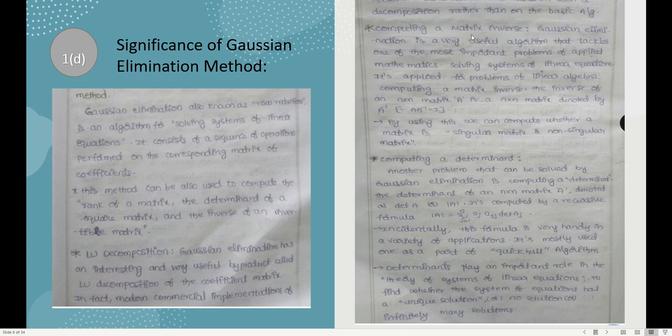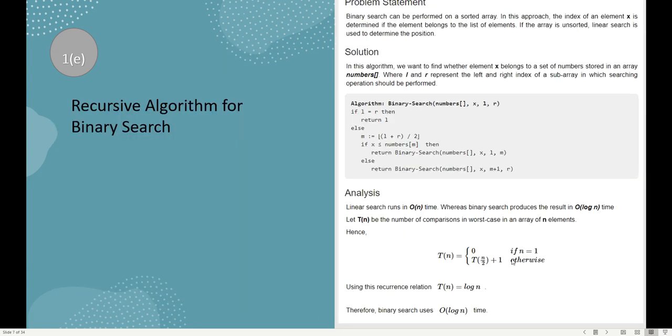The next question asks about the significance of Gaussian elimination. It is also known as row reduction, and this algorithm is used for solving systems of linear equations. Gaussian elimination is also used for LU decomposition, matrix inverse, and finding a determinant. I have given a detailed explanation for that, so just pause the video and read through it.